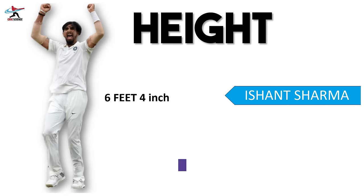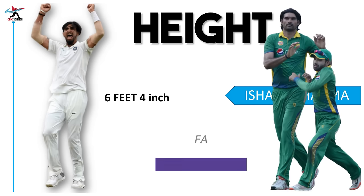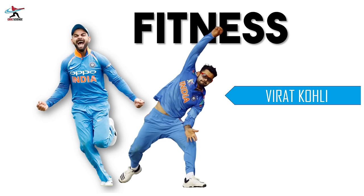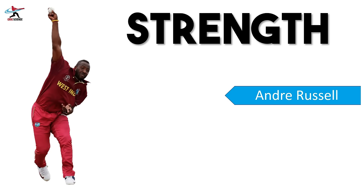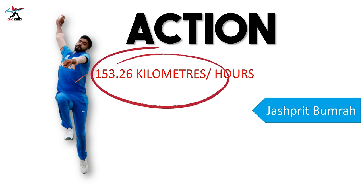लोग अकसर कहते हैं कि fast baller के लिए height होनी चाहिए — पर इस हिसाब से तो इन्हें दुनिया का सबसे तेज baller होना चाहिए. तो क्या fitness ज़रूरी है? विराट से ज़्यादा तो शायद ही कोई fit हो, पर विराट 125 km प्रति घंटे से ज़्यादा speed से ball नहीं डाल सकते. तो शायद strength होगा? इस हिसाब से तो Russell भाई साहब को दुनिया का सबसे तेज baller होना चाहिए, पर वो भी नहीं हैं. तो क्या एक शानदार action ही केवल fast balling के लिए ज़रूरी है? पर बुमरा का action तो cricket history में अपने आप में एक unique action है. तो फिर वो कौन से factors हैं जो आपके speed के लिए responsible हैं?